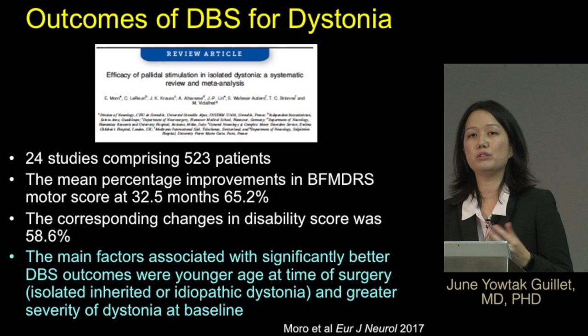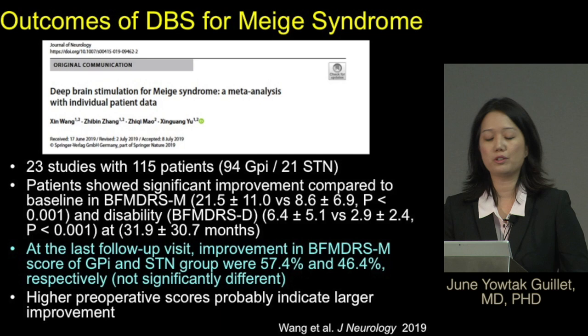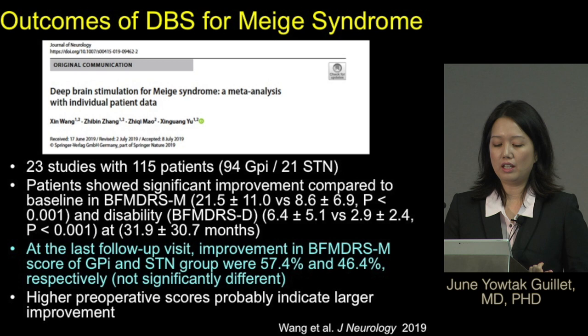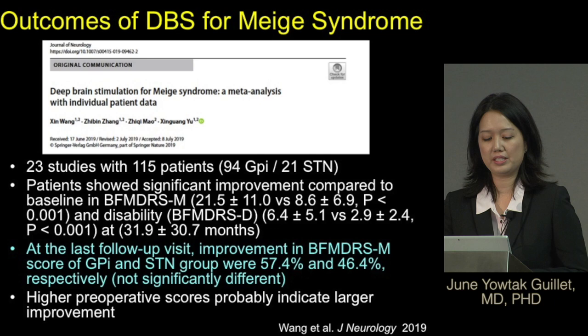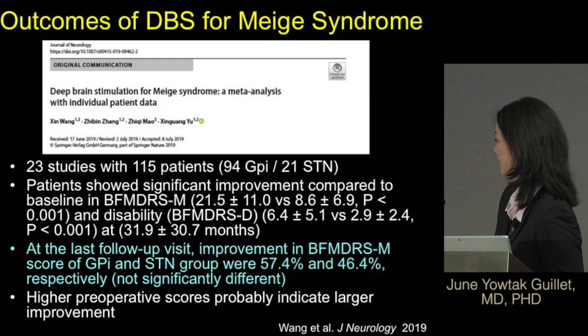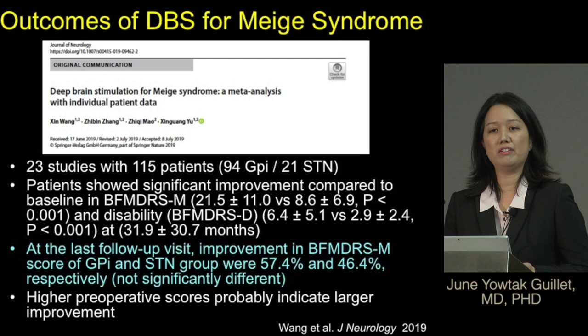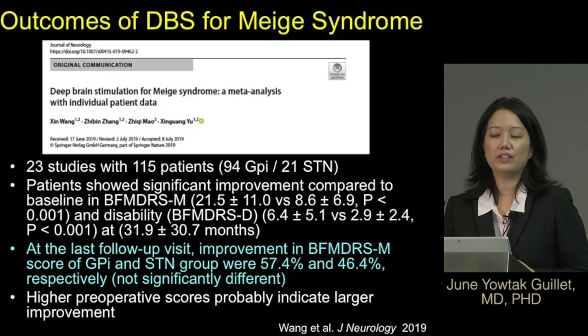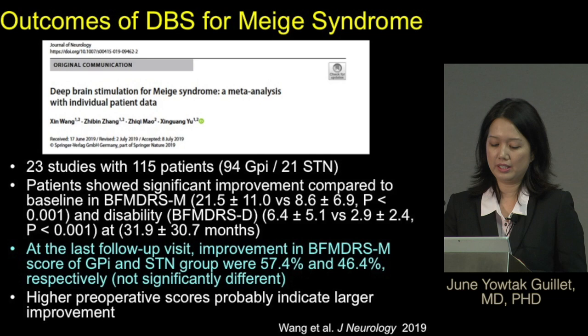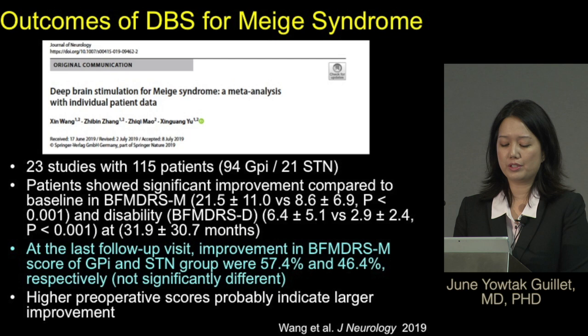Specifically for cranial dystonia or Meige syndrome, a study of 115 patients compared GPI versus STN DBS. Both targets showed improvement in motor scores, and the differences between targets were not statistically significant: GPI showed 57 percent improvement and STN showed 46 percent. Research is ongoing to determine the optimal target for dystonia patients. Again, higher preoperative scores were associated with larger improvement in symptoms.